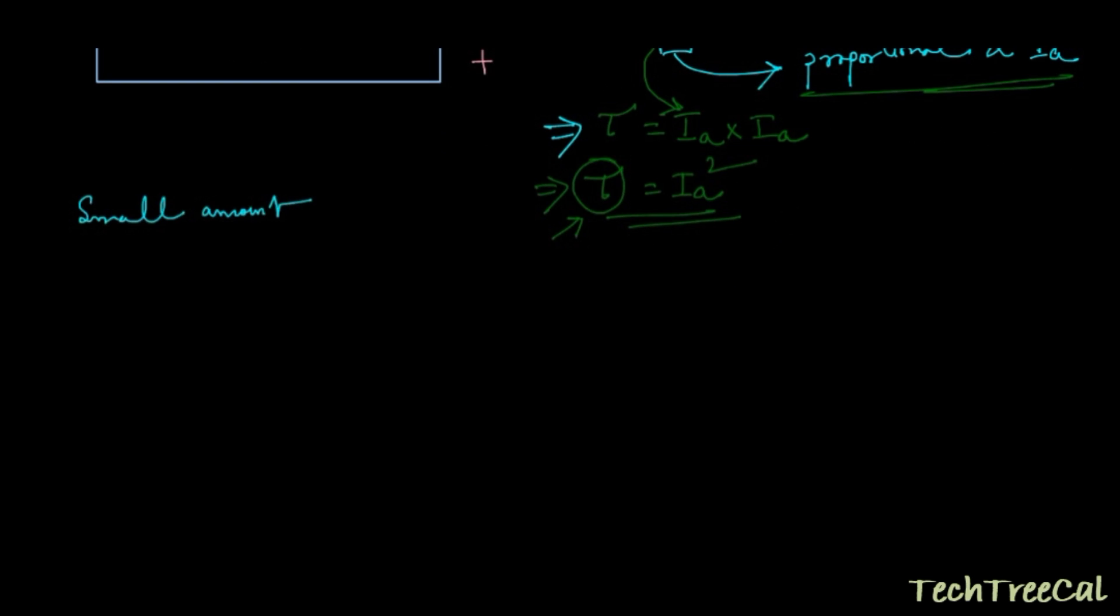Small amount of current means suppose if you are increasing the value of the current from 2 to 4 ampere, then the torque is actually increasing 4 to 16. That means 4 times.